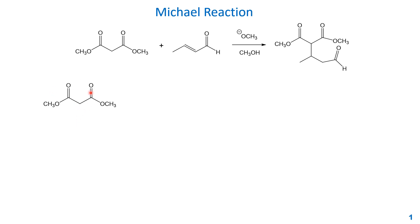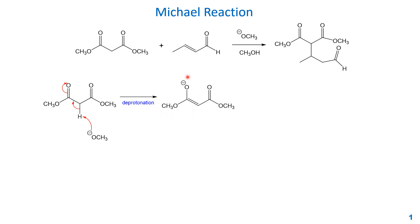Let's look at the arrow-pushing mechanism. The first step is the alpha proton of this Michael donor, the malonic ester, being deprotonated by the base. Methoxide deprotonation pushes the sigma electron back to form the pi bond, and then pushes the pi bond between the carbon and oxygen to the oxygen, forming a negative charge. So deprotonation forms this enolate moiety — the enolate is the nucleophile.